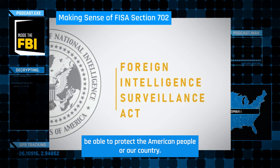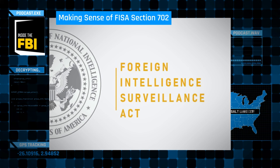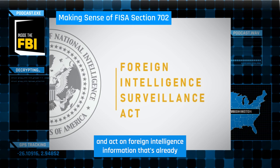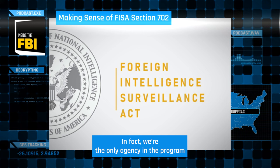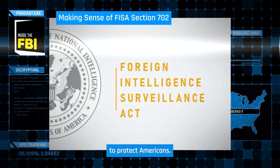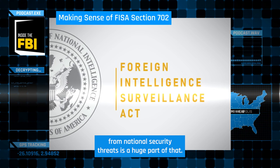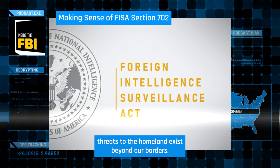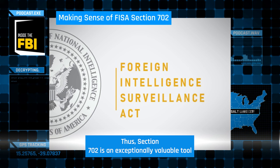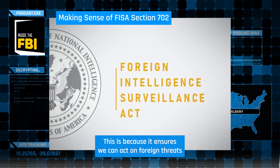The FBI's role is to review, analyze, and act on foreign intelligence information that's already been lawfully collected under Section 702. In fact, we're the only agency in the program that is allowed to take action inside the U.S. to protect Americans. The FBI is unique in that it has a dual mission — we're both a law enforcement agency and an intelligence agency. The primary national security threats to the homeland exist beyond our borders, so Section 702 is an exceptionally valuable tool for national security investigations.